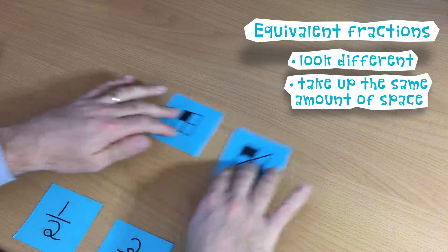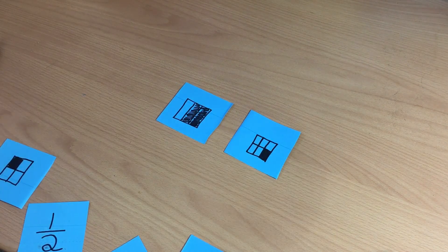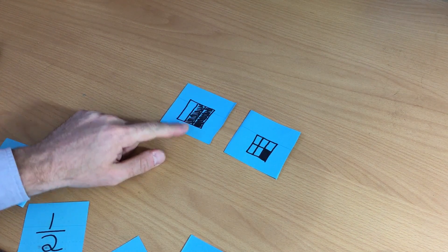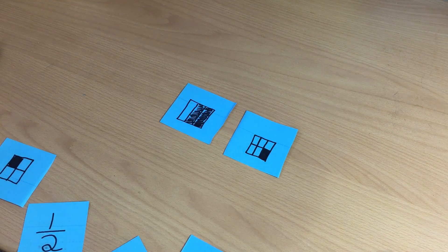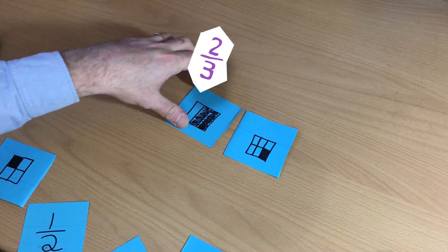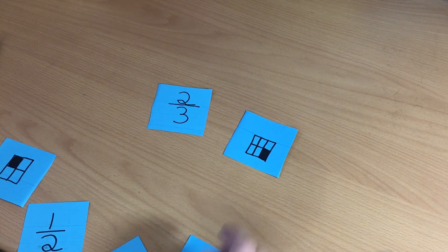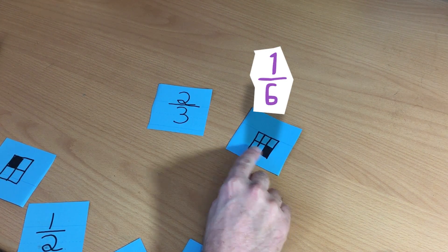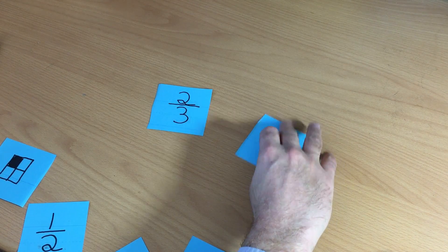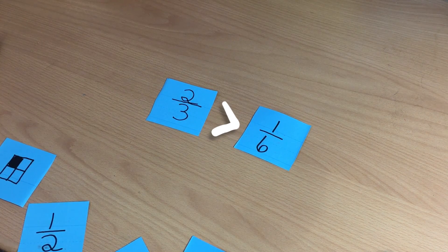What if we had fractions that didn't take up the same amount of space — like these two fractions, for example? Which fraction is greater? Simply looking at the pictures, you can see that this fraction has a shaded part that's a lot bigger than this fraction. This fraction should be called two thirds because two out of three pieces are shaded in, and we can check our work by flipping over the card. This fraction we would call one sixth because we have one piece shaded in out of six in total. We can then say that two thirds is greater than one sixth based on our picture.